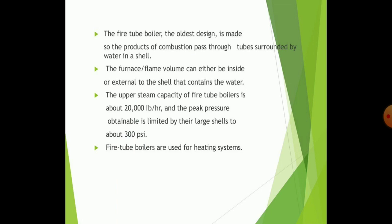Fire tube boilers are the oldest design type. In them, combustion gases pass through tubes surrounded by water inside the shell. The furnace or flame volume can either be inside or external to the shell that contains the water. The upper steam capacity of a fire tube boiler is about 20,000 litres per hour, and the peak pressure obtainable is limited by the large shell to about 3,000 pounds. Fire tube boilers are used for heating systems and particularly for steam generation with a moderate rate of heat transfer.